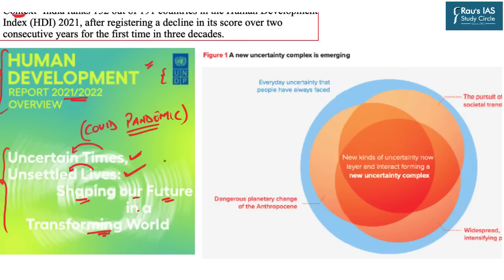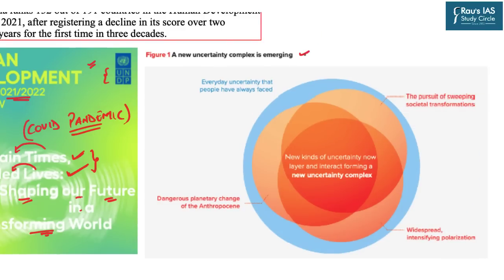This report says that because of certain factors there is growing uncertainty in the world. First, society is getting transformed. In the post-pandemic times, we have seen food insecurity issues, lack of hospitalization infrastructure across countries, and inequality in terms of vaccine distribution among all countries. So there is a societal transformation underway.